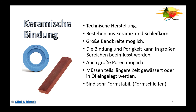Die keramische Bindung wird technisch hergestellt durch ein Brennverfahren – Keramik und Schleifkorn werden zusammengepresst und bei Temperatur verfestigt. Dadurch gibt es eine ziemlich große Bandbreite: man kann grobporig oder feinporig herstellen, von grobschleifen bis feinschleifen ist alles möglich. Ganz große Poren sind möglich, und es wird oft beim Vorschleifen verwendet. Wenn man einen solchen Schleifstein hat, muss er auch längere Zeit gewässert oder in Öl eingelegt werden, da mehrere Poren vorhanden sind – es dauert eine gewisse Zeit, bis die Poren mit der Flüssigkeit gefüllt sind und die Luft entweichen kann.